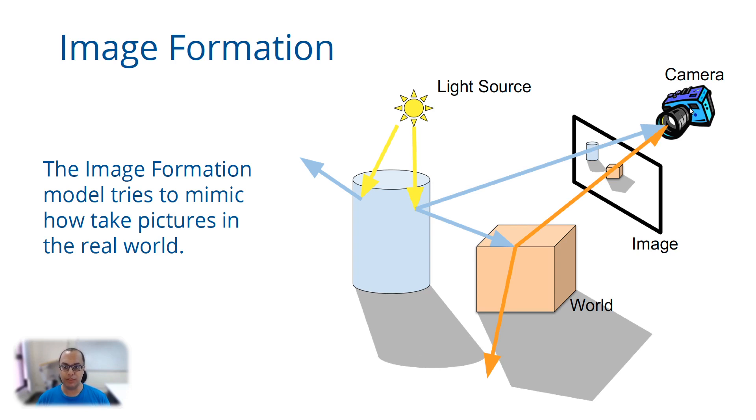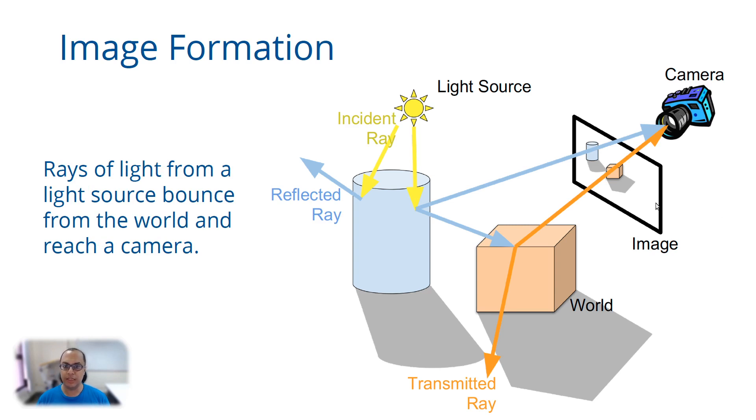We are trying to mimic this process to create our images in computer graphics. Let us see some nomenclature. The ray that is coming from the light source is called the incident ray. It can bounce off objects and then it becomes a reflected ray, and if it passes through translucent or transparent objects, then that ray is called the transmitted ray.